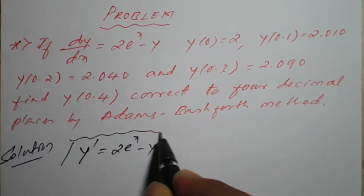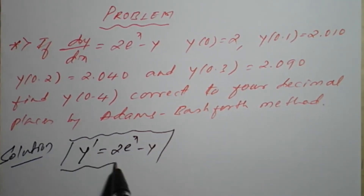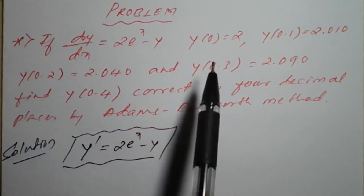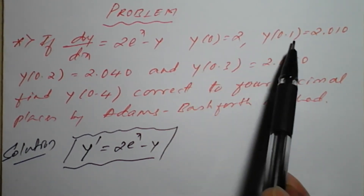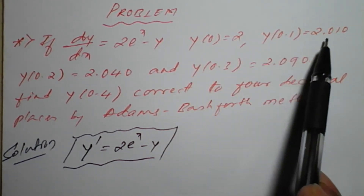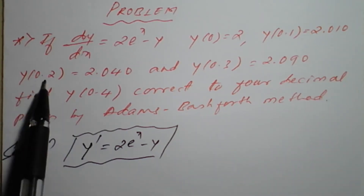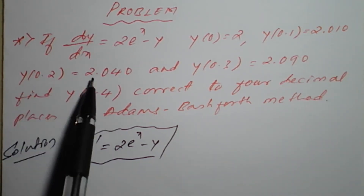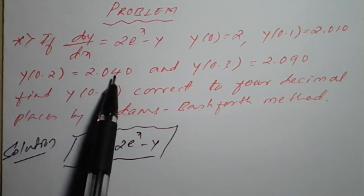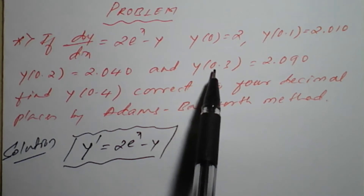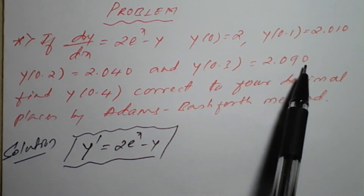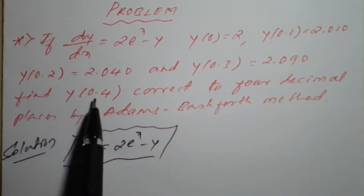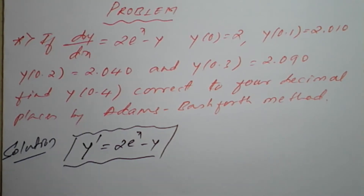This is a given differential equation and the values given are: y(0) = 2, y(0.1) = 2.010, y(0.2) = 2.040, and y(0.3) = 2.090. We need to find y(0.4). We will prepare a table for this now.